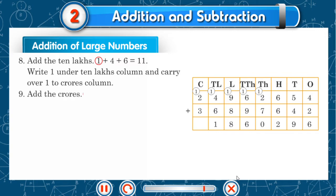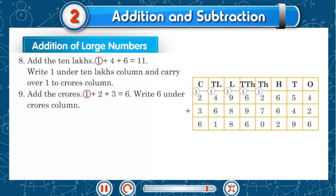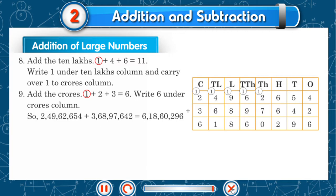Add the crores — 1 plus 2 plus 3 is 6. Write 6 under the crores column. So, 2,49,62,654 plus 3,68,97,642 is equal to 6,18,60,296.